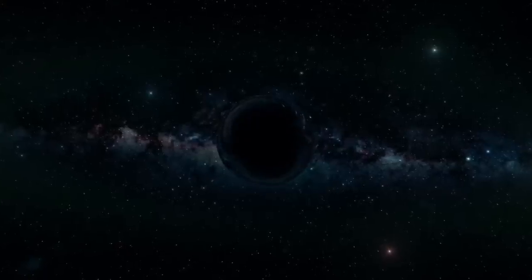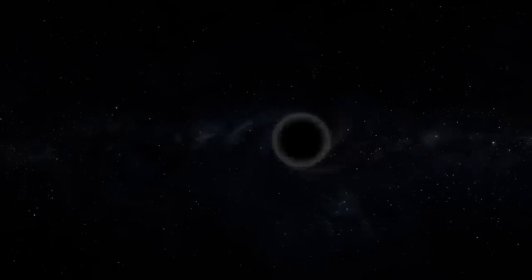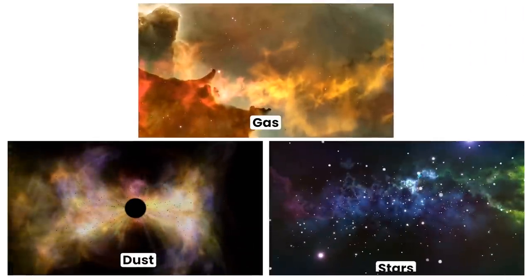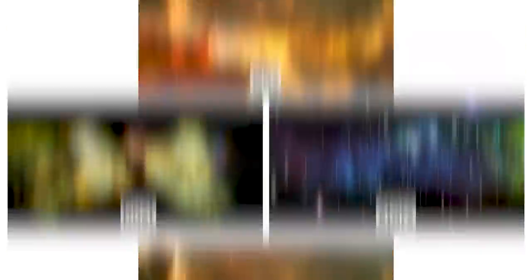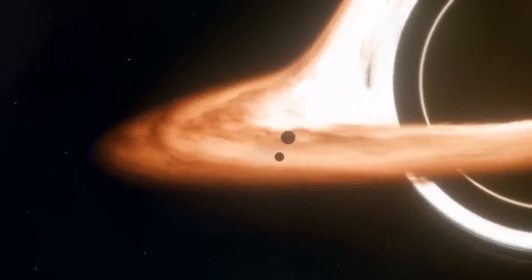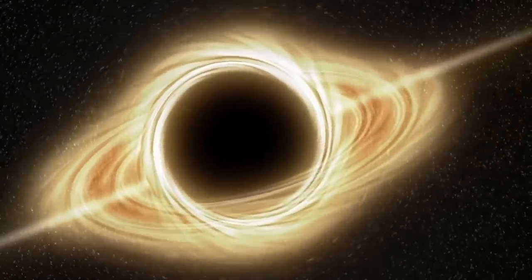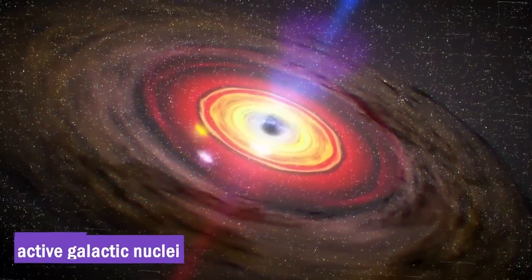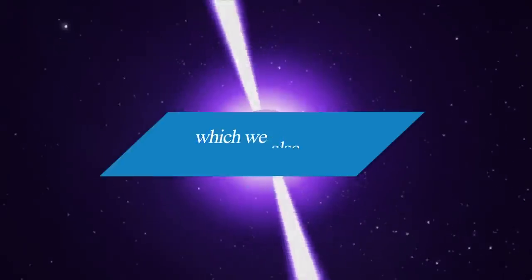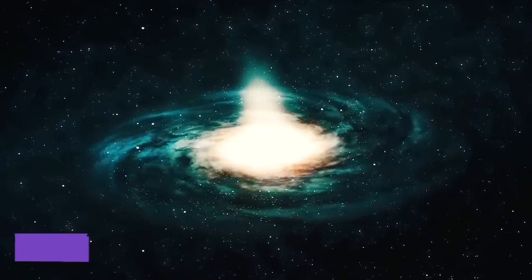We've already discussed that black holes are born from the collapse of massive stars and grow by consuming everything in their path: gas, dust, stars, and even other black holes. But some black holes become so gluttonous that the material swirling around them heats up, causing them to emit light that telescopes can detect. These are known as active galactic nuclei, or AGN. The most extreme AGN are quasars.